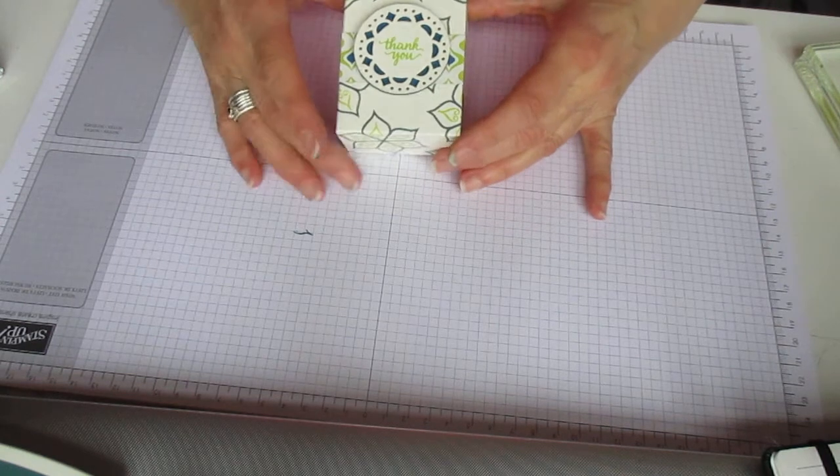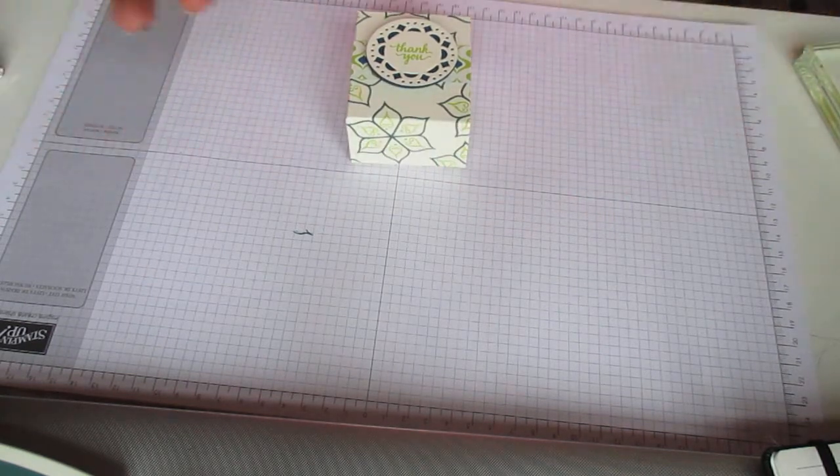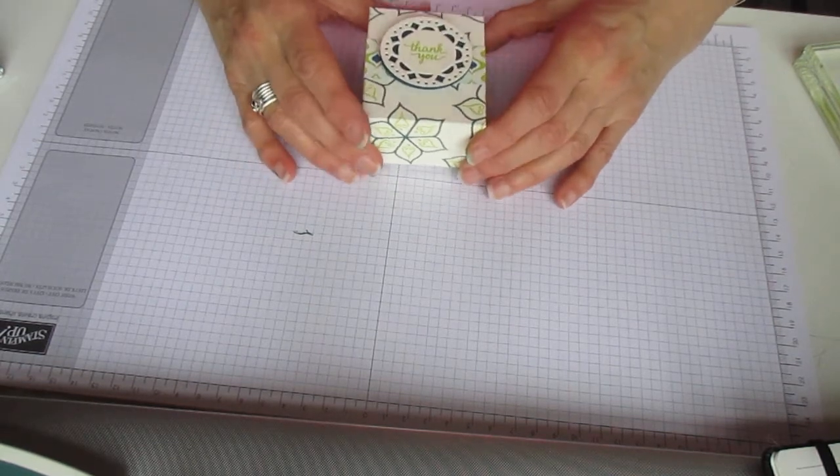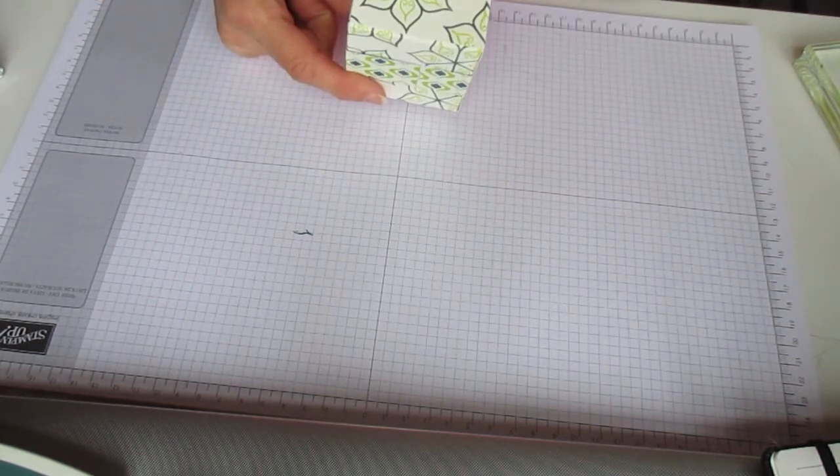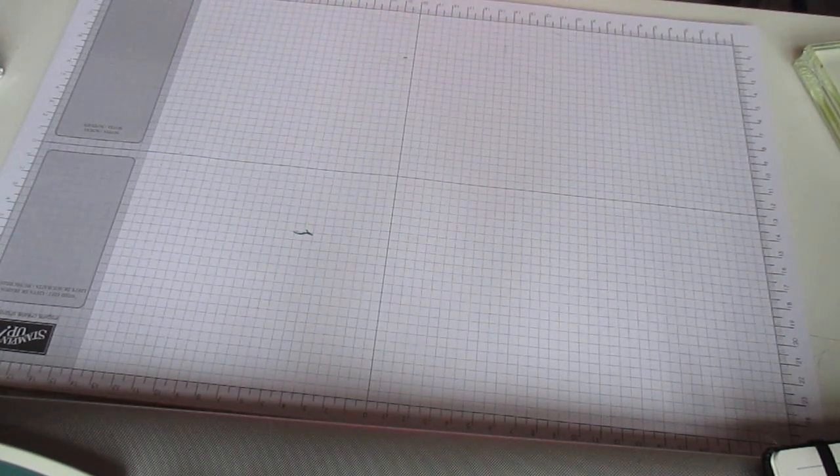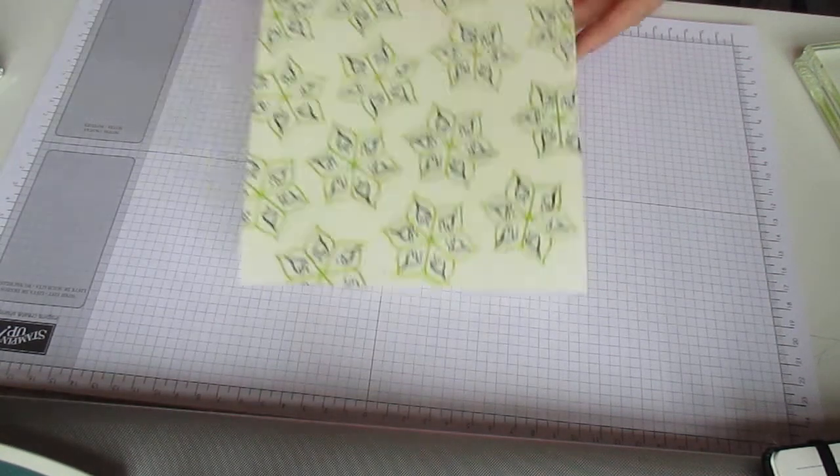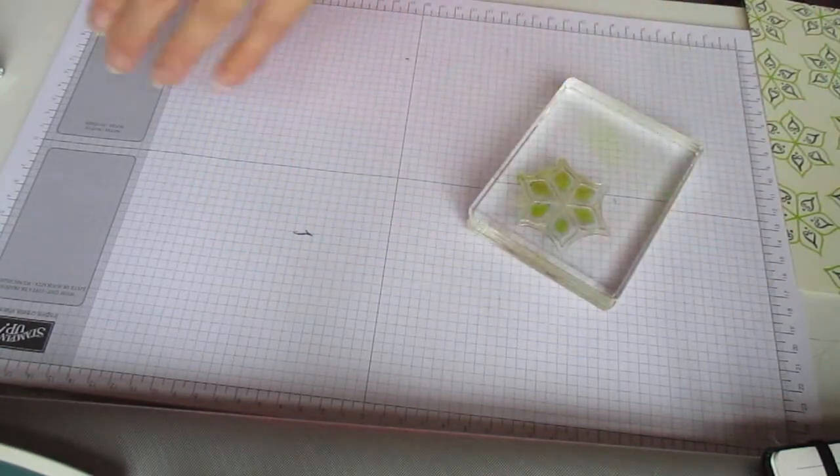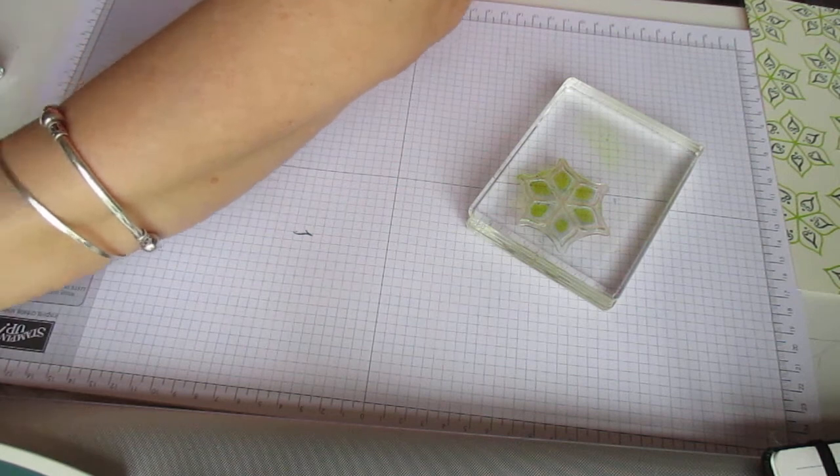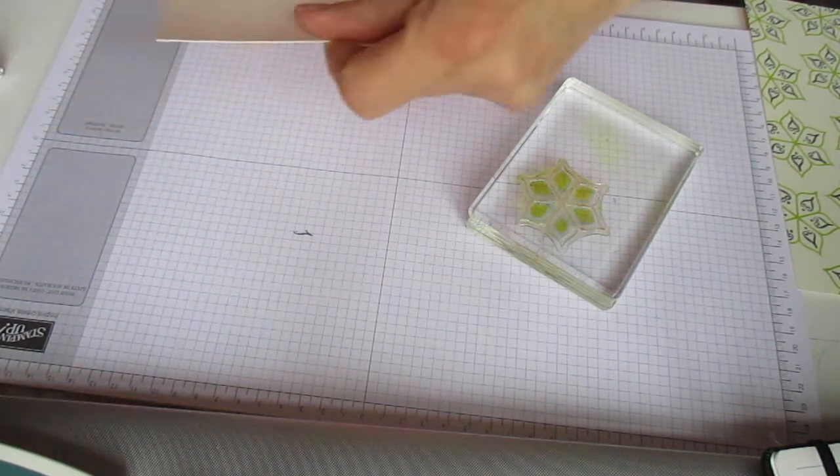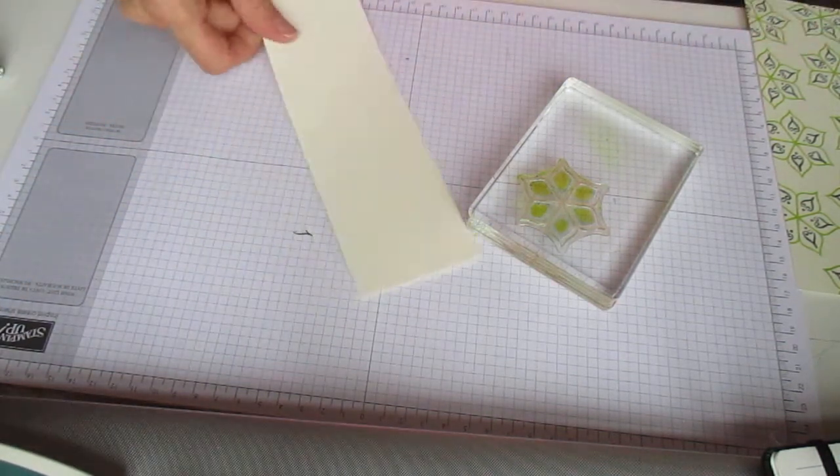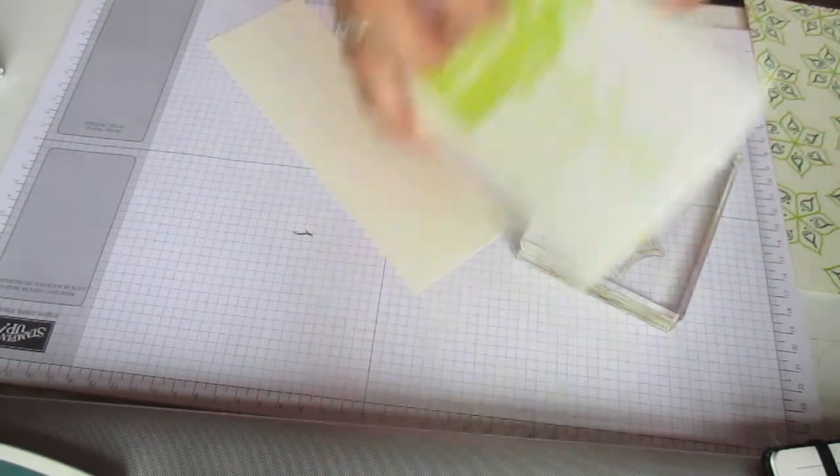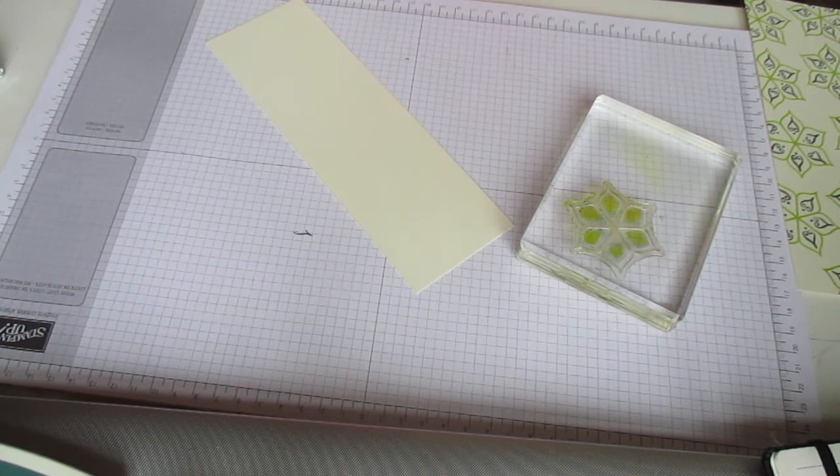I'm going to show you how to make this. When I was thinking about how I was going to decorate the box, I didn't want to cover the whole thing in designer series paper, so I decided to do some hand stamping. I've done it already because you don't want to sit and watch me stamp the whole thing. However, I have a little scrap of card here so I'll just give you a quick demonstration.